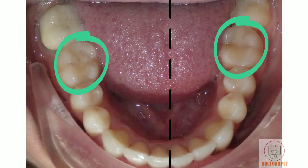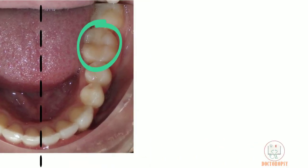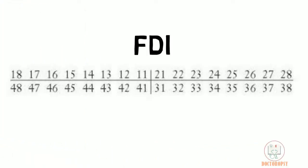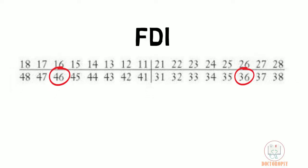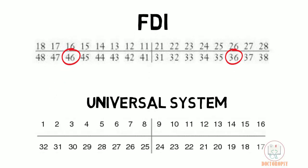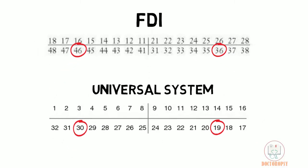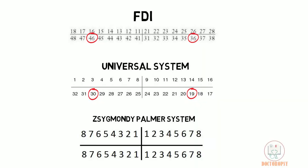Mandibular first molar is the sixth tooth from the midline. Its tooth number in the FDI system is 36 and 46, in the Universal system 19 and 30, and in the Zsigmondy-Palmer system the tooth number is 6 with appropriate quadrant brackets.